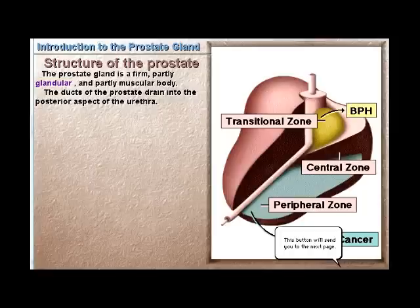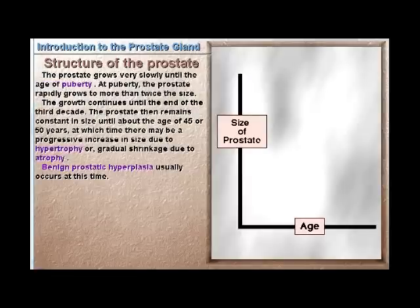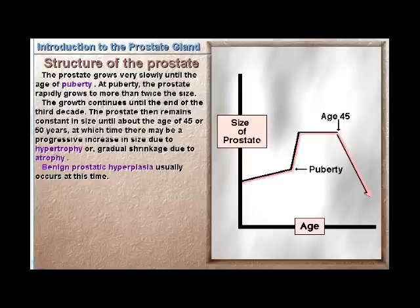The prostate gland is a firm, partly glandular and partly muscular body. The ducts of the prostate drain into the posterior aspect of the urethra. The prostate grows very slowly until the age of puberty, at which point it rapidly grows to more than twice its size.